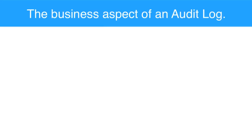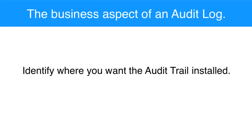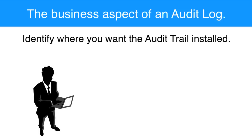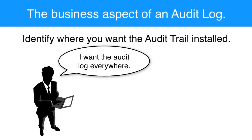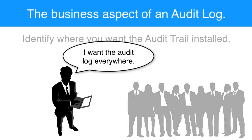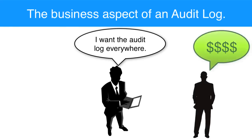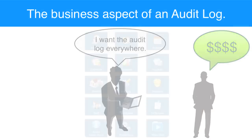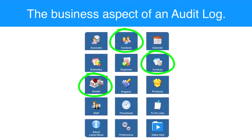Let's talk about the important business aspects of an audit log. If you're going to have a solution that requires an audit trail, you need to identify where you want it installed — meaning what parts of the database you want tracked. The default answer I get from most people is that they want the audit trail on all screens all the time, but if you tell your FileMaker developer that, you're going to receive a quote for a much larger project than you wanted to pay for.